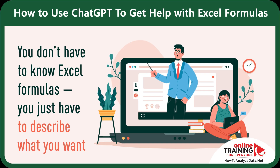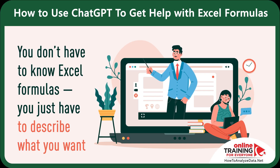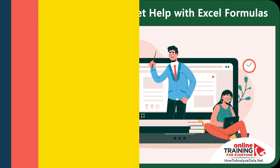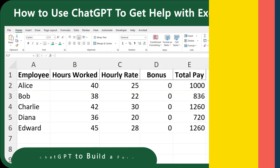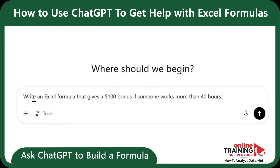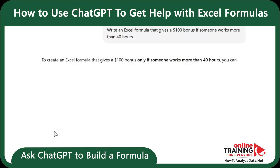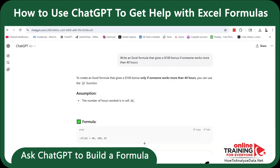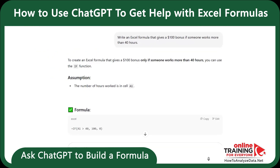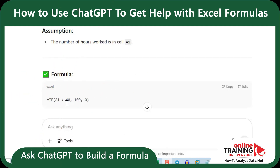You don't have to know Excel formulas — you just have to describe what you want. Let's start by asking ChatGPT: "Write an Excel formula that gives a $100 bonus if someone works more than 40 hours." ChatGPT quickly gave us the answer. It used an IF formula: if A1 is greater than 40, return 100; otherwise return 0.